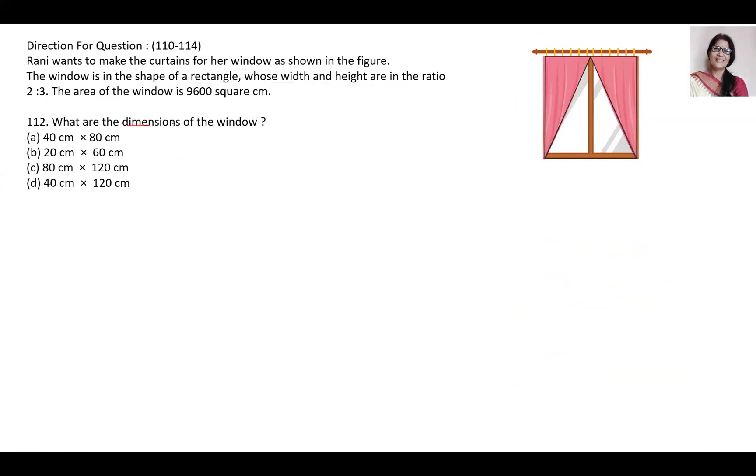Check the dimensions of the window. That means what is length times breadth. 2 to 3. The length is equal to 3x and breadth is equal to 2x. Then area is given as 9600. Area equals L into B.